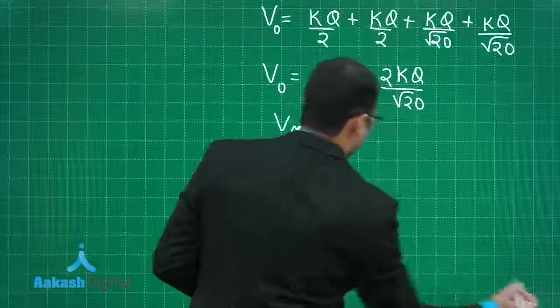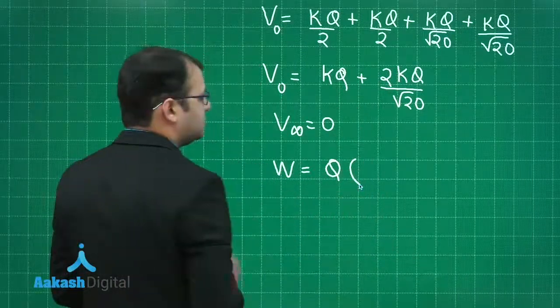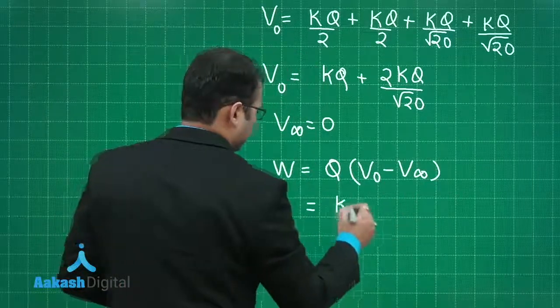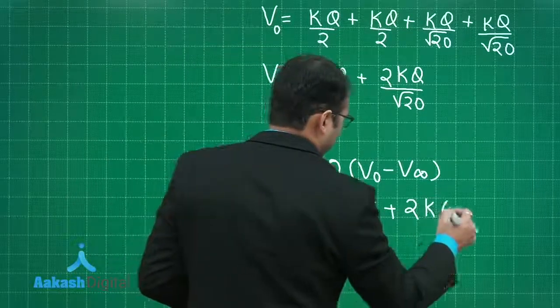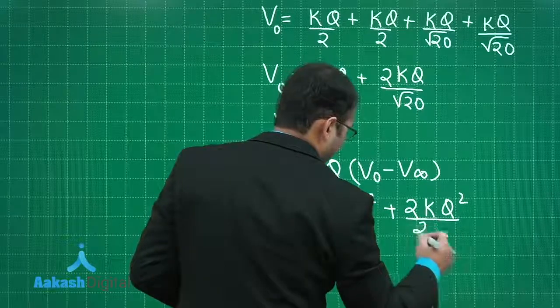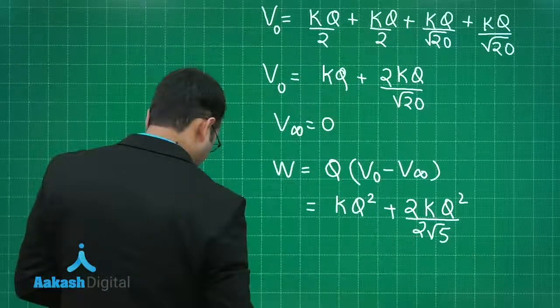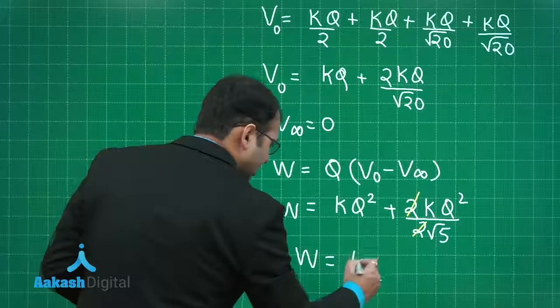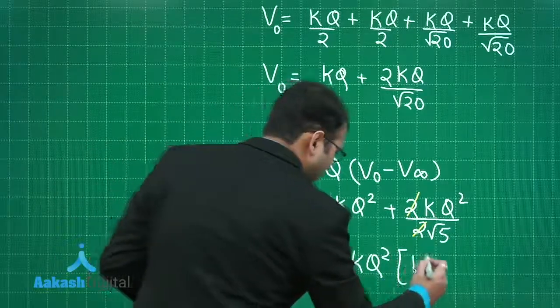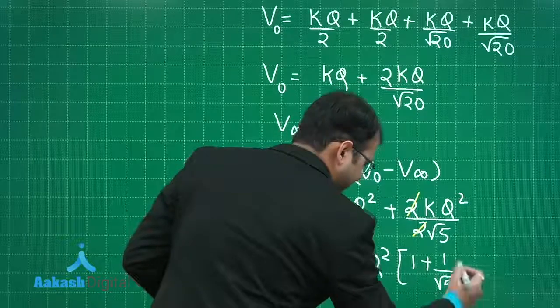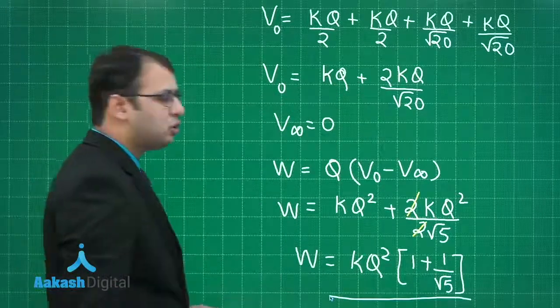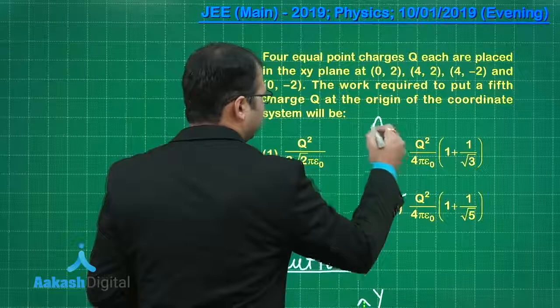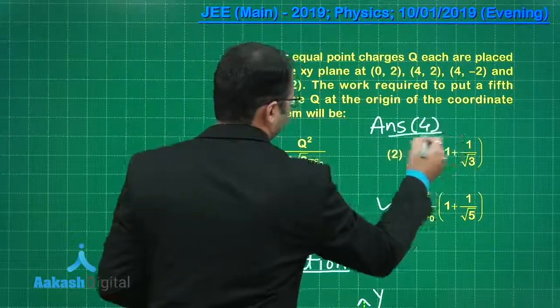On finding the work done you will get capital Q, the charge which has been mobilized, times final position minus initial position. This would be K capital Q square plus 2K capital Q square by 2 root 5. This 2 and this 2 will be cancelled. Work done equals KQ square times 1 plus 1 by root 5. Among the 4 options given, option number 4 is the right answer.